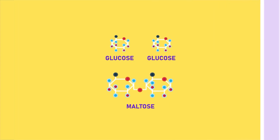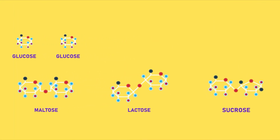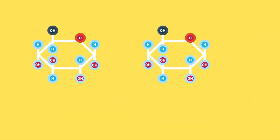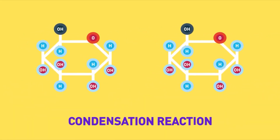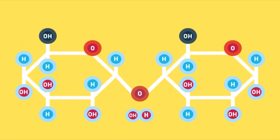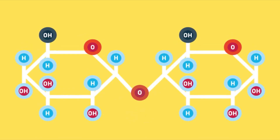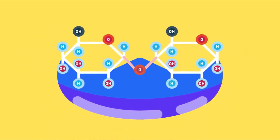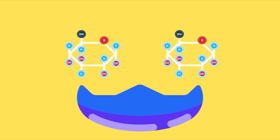The formation of one molecule of disaccharide requires two molecules of simple sugars. Each reaction is known as a condensation reaction. Condensation is a chemical reaction whereby two simple molecules are joined together to form a larger molecule, with the removal of one molecule of water. On the other hand, when a disaccharide is treated with a suitable enzyme, it breaks down to form monosaccharides. In this reaction, water is added and thus the reaction is called hydrolysis, or hydrolytic reaction.